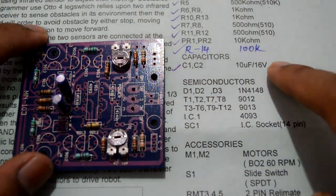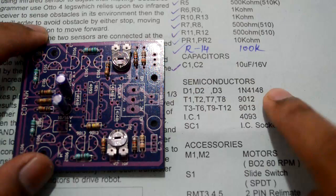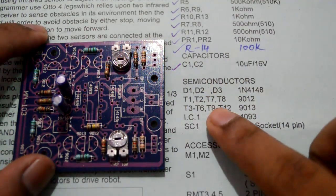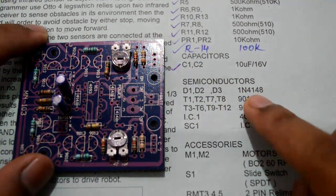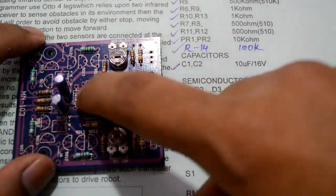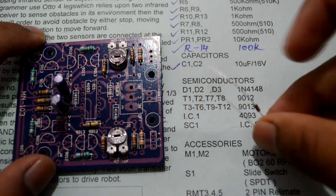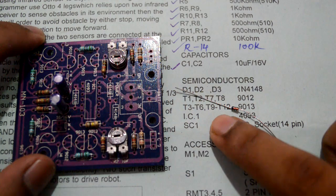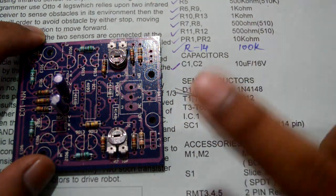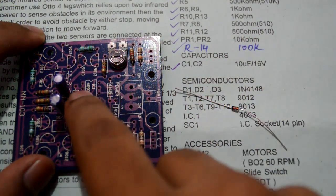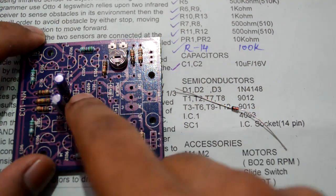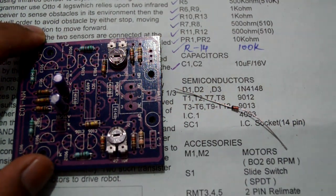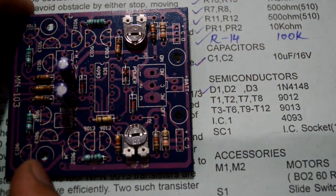Now since we have completed with the capacitors, we'll be moving to the semiconductor components. The first thing I mentioned is diodes D1, D2 and D3 which goes with the value 1N4148 and which go here, here and here. This is a diode and they have a polarity - the black part is negative, so make sure you solder them correctly. The dash over there is the negative part of the diode.